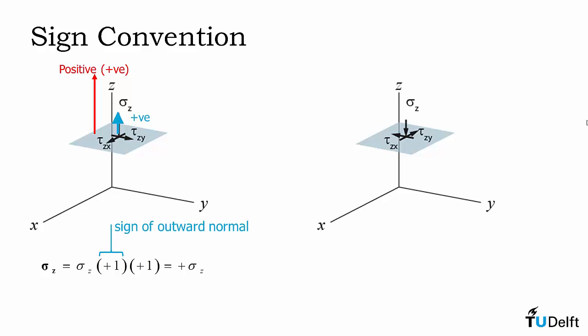Remember the first positive number is the sign of the outward normal and the second positive number is the sign of the resultant force.